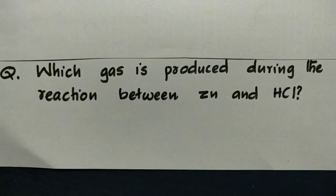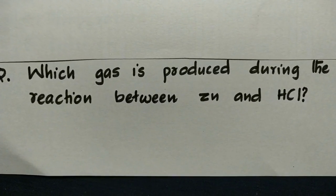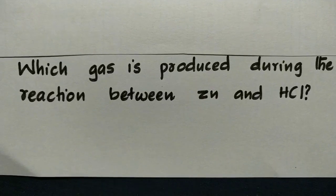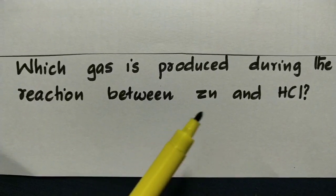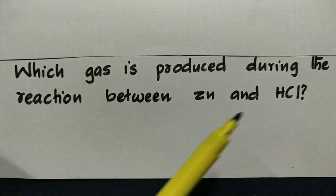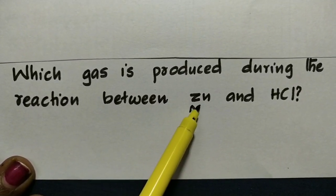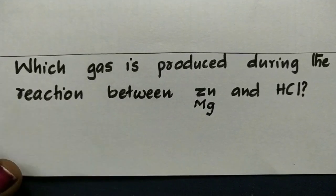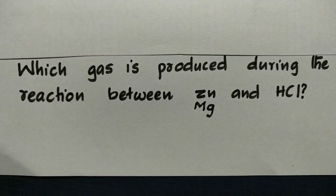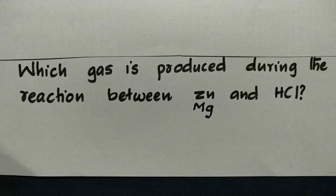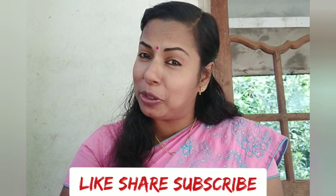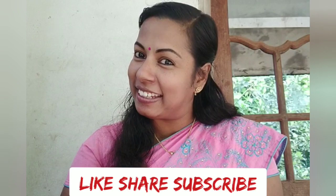This is an assignment question for 10th class: Which gas is produced during the reaction between zinc and HCl? The answer is the same as for magnesium and HCl — hydrogen gas. Please comment with your answer. If you are learning, share this video with your friends.